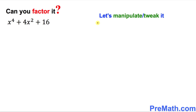I'm going to add 4x² and subtract 4x². It doesn't make any difference if you add and subtract the same quantity — it's the same as adding zero. Why I did it, I'll explain in a few minutes.